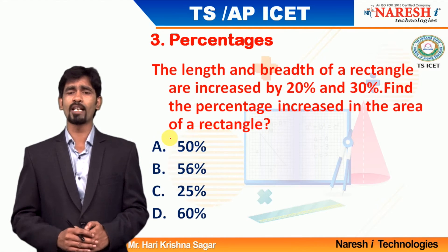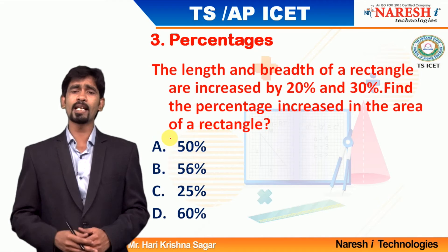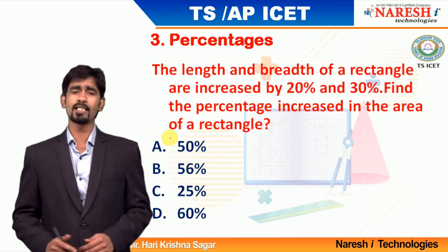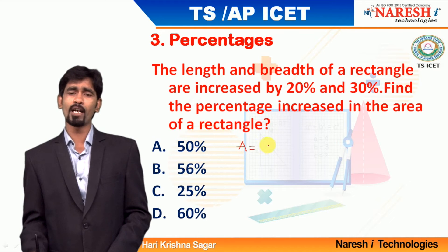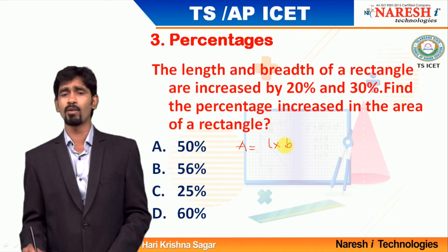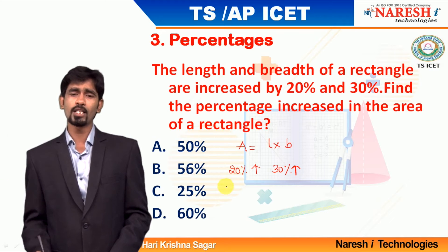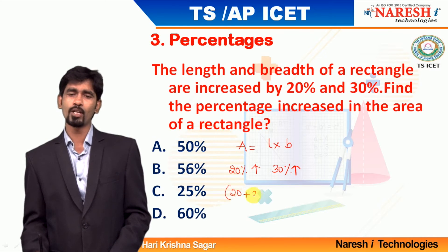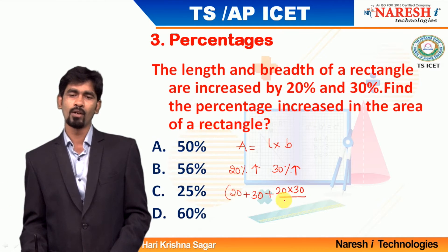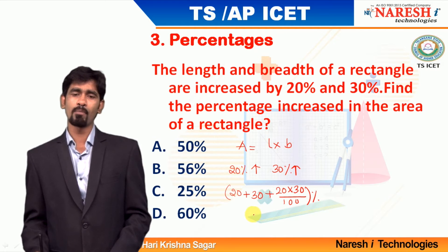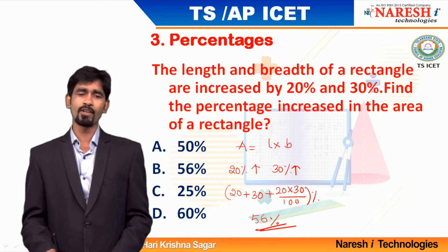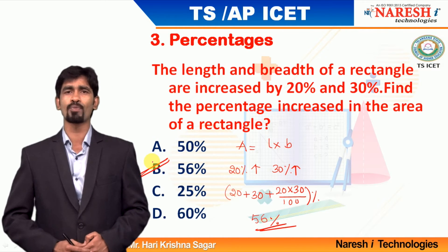The length of a rectangle is increased by 20 percentage and breadth is increased by 30 percentage. What is the percentage increase in area? Whenever you have repeated increases or terms in product form, you can apply successive percentage. The net increase will be 20 plus 30 plus 20 into 30 divided by 100. That is 50 plus 6, giving a result of 56 percentage. Mark your answer choice as option B.